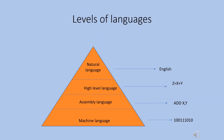The third level is high-level language, which is similar to human language. You can use a high-level language for coding and debugging. The fourth level is natural language. This is the fourth level of classification of computer languages.